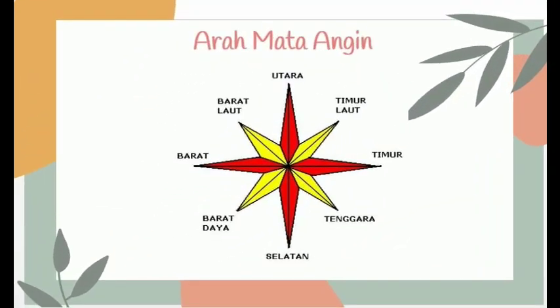Teman-teman, kita lihat di sini ada delapan arah mata angin. Yang paling atas menunjukkan arah utara, kemudian timur laut. Kita berjalan ke arah kanan ya, setelah utara ada timur laut, timur, tenggara, selatan, barat daya, barat, dan barat laut. Jadi totalnya ada delapan arah mata angin.